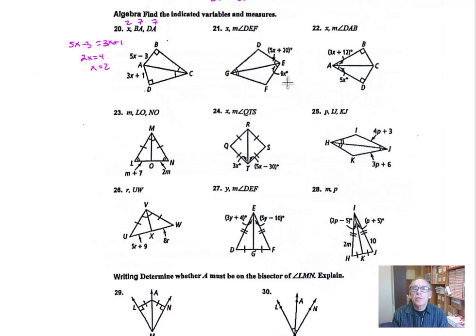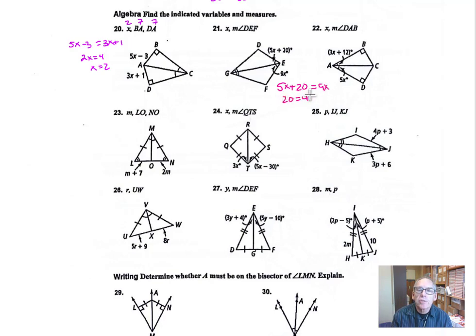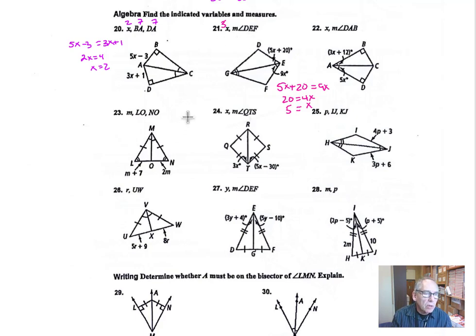We want to find X. These two angles are congruent to each other since this is a bisector, so we set 5x plus 20 equal to 9x. Taking 5x away from both sides gives 20 equals 4x, so x equals 5. We want the measure of angle DEF: that's twice 5x plus 20. Five times 5 is 25, plus 20 makes 45, and twice that is 90 degrees, so angle DEF is a 90-degree angle.